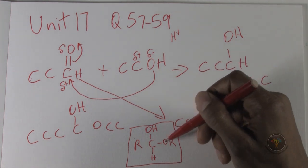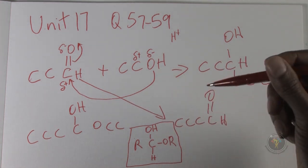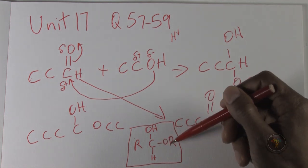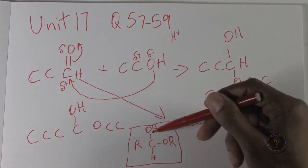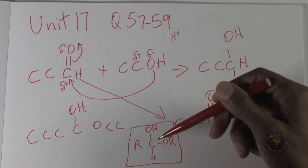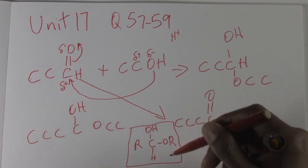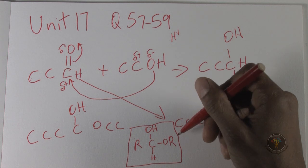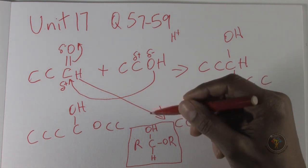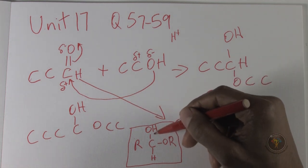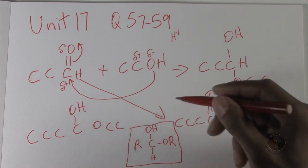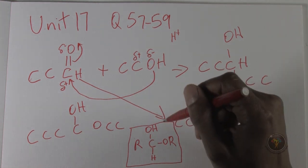So a hemiacetal has an OR group and an OH group on the central carbon. That's the key part of it: this OR and the OH group on that same central carbon. It reminds you sort of of an ester, but an ester would have had a double bond to an oxygen over here. So this is a hemiacetal.